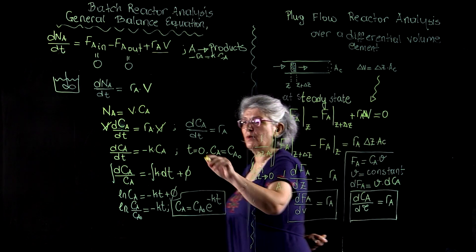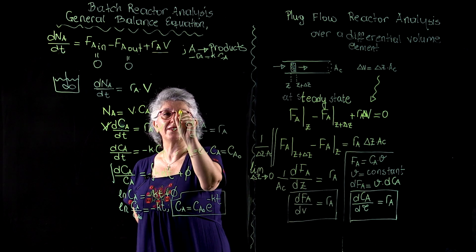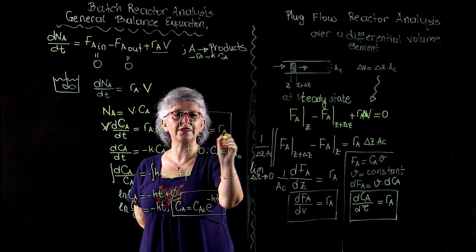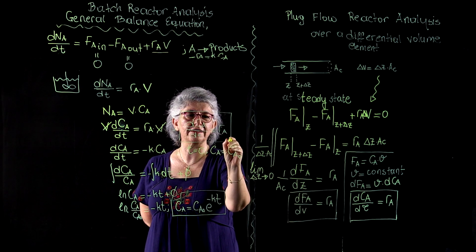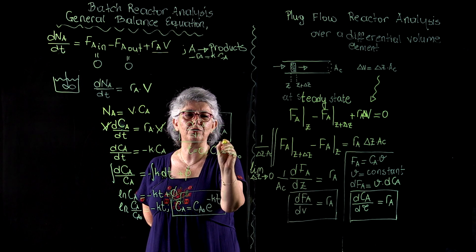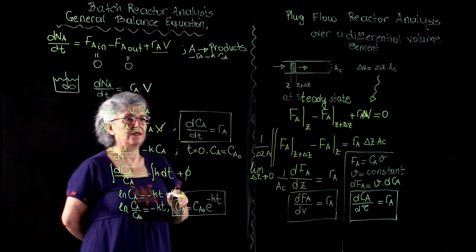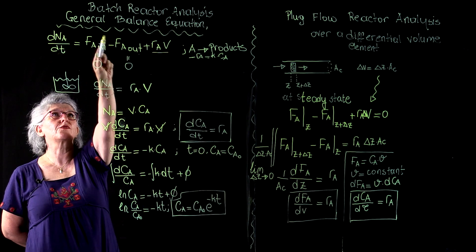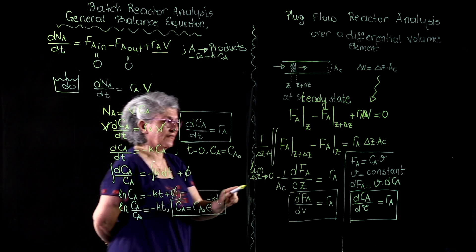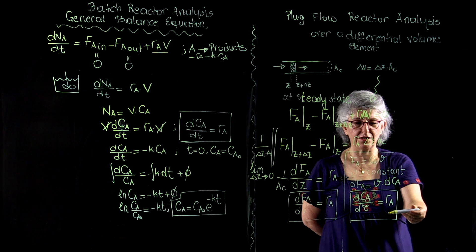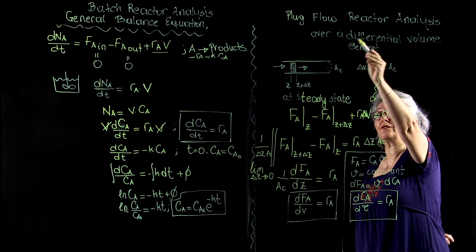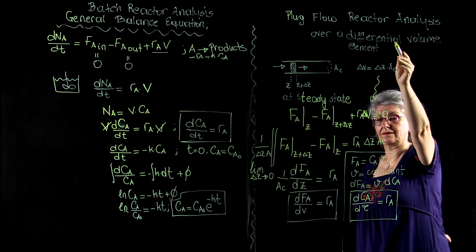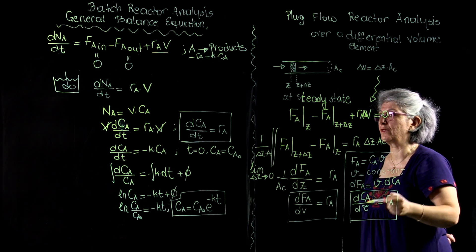Compare this expression dC_A/dτ equals R_sub_A with dC_A/dt equals R_sub_A. This was the design equation for a batch reactor. This is the design equation for a plug flow reactor where volumetric flow rate is constant.